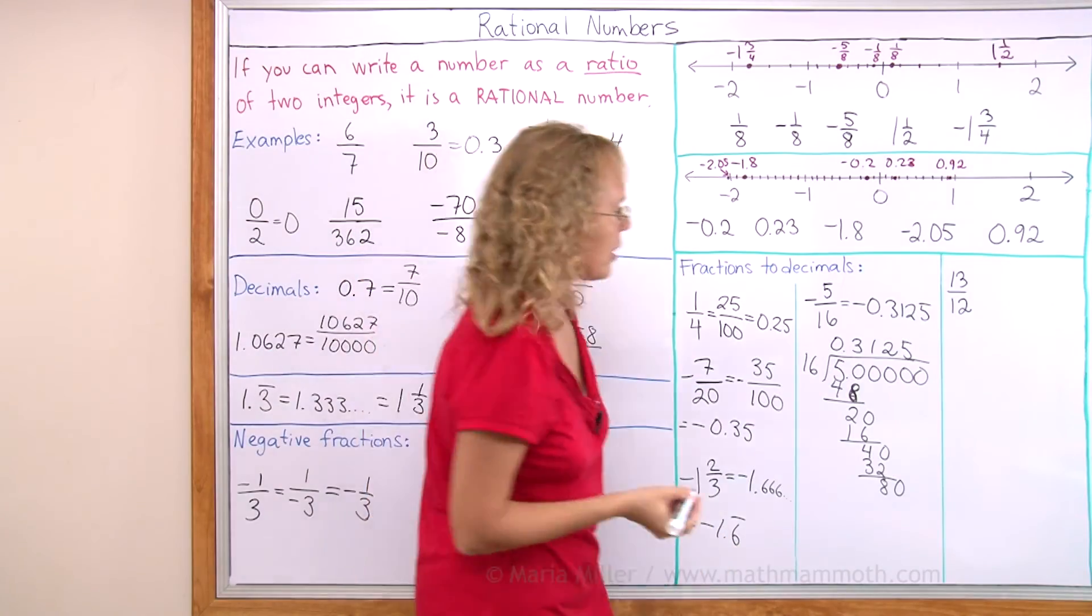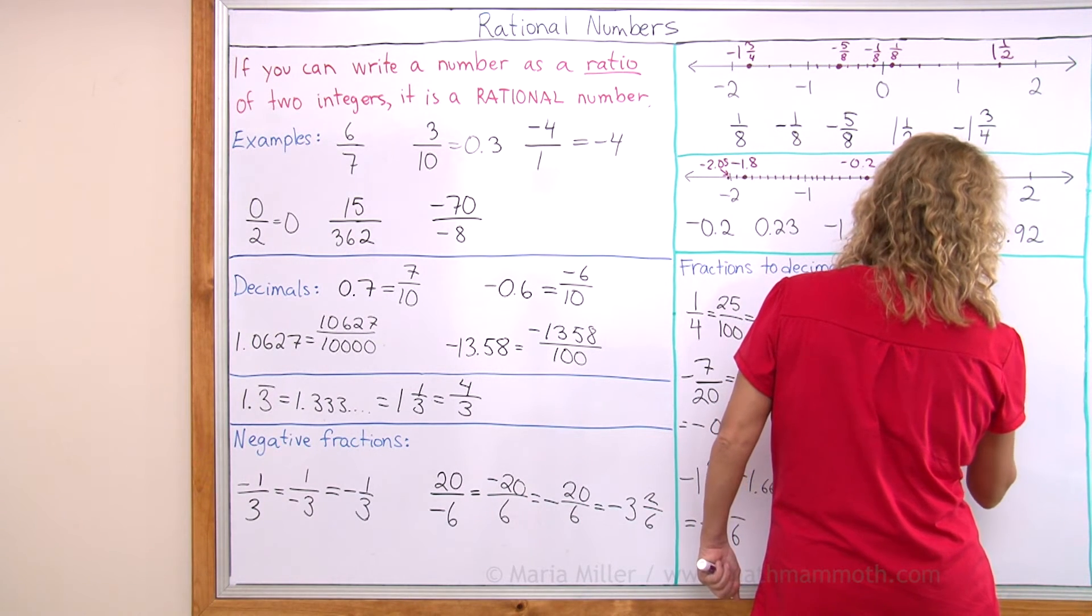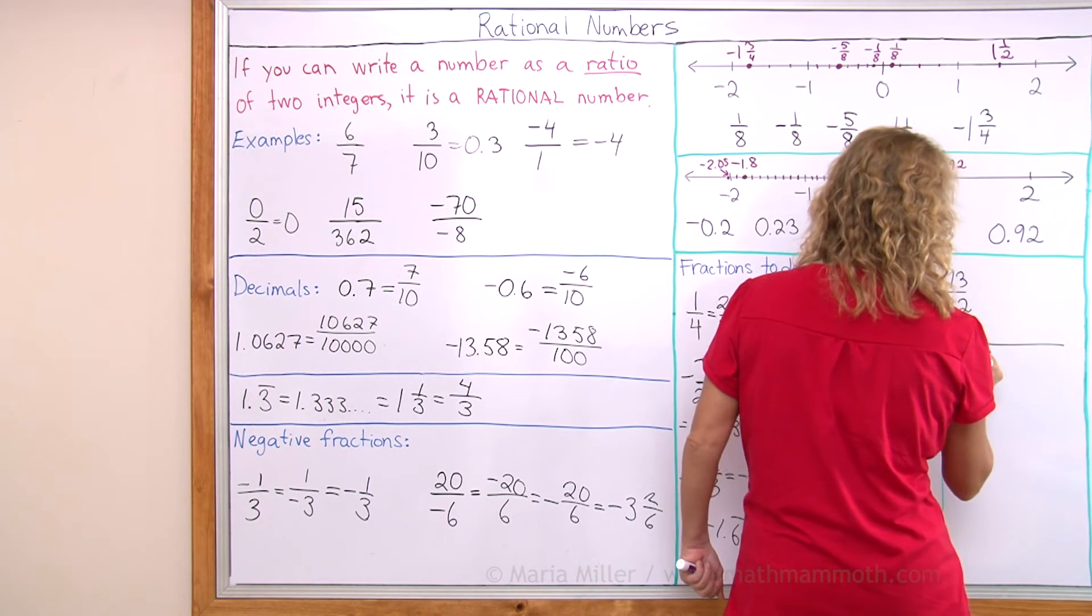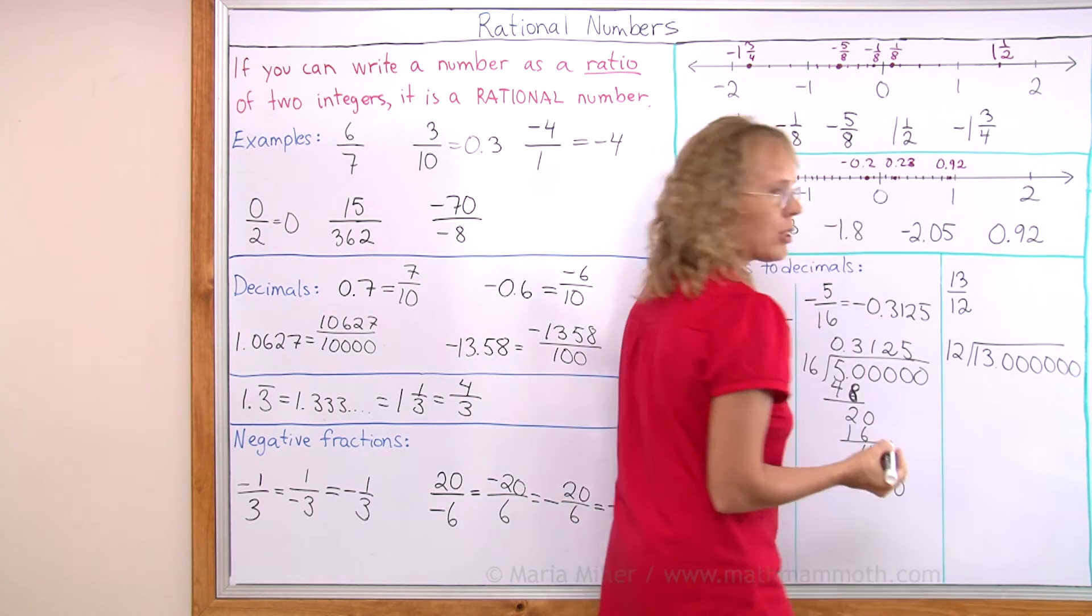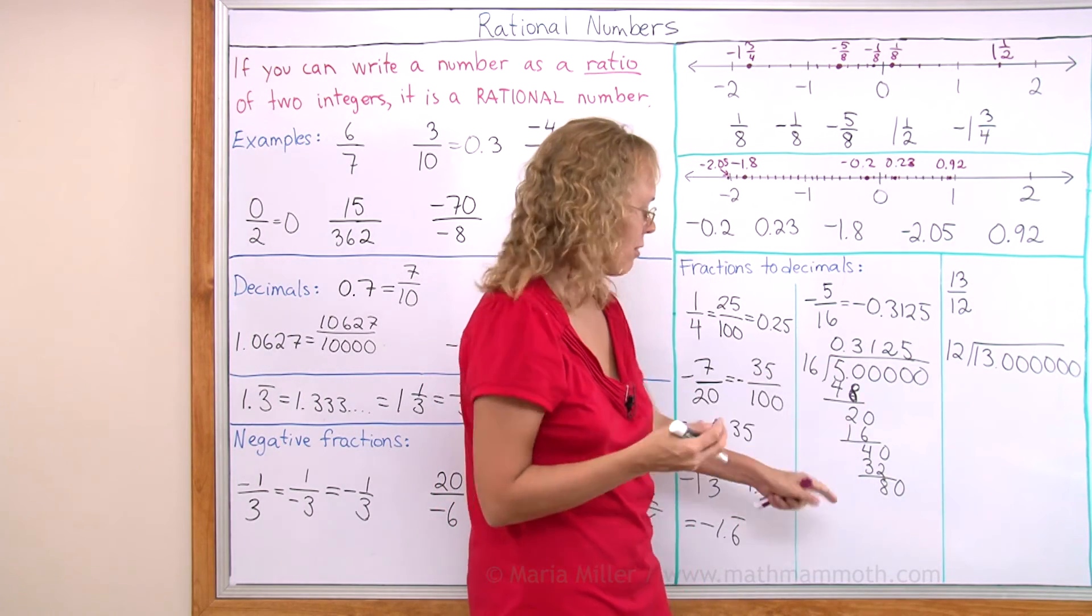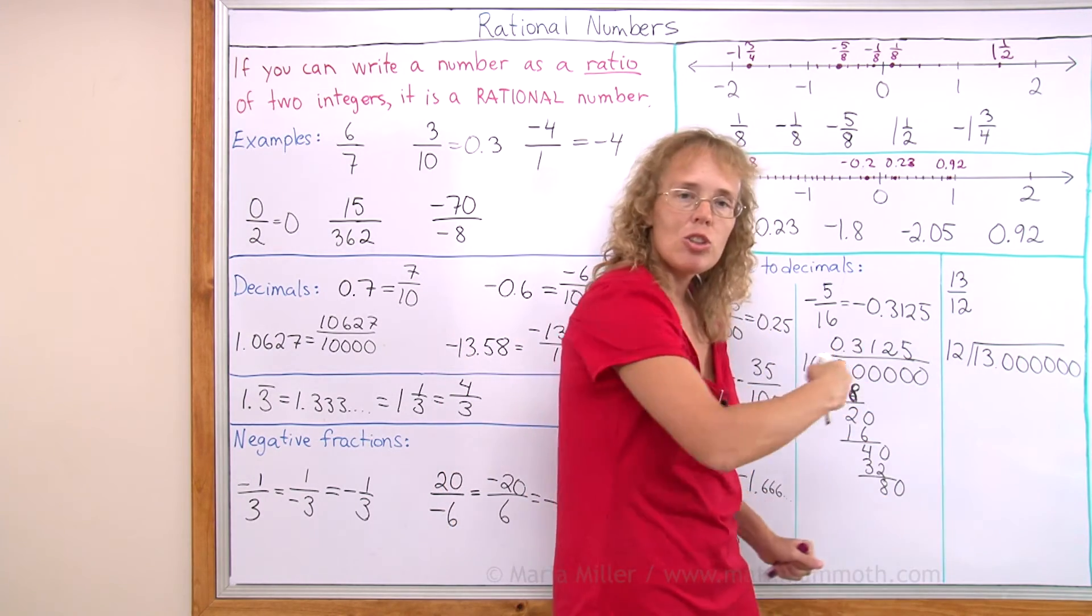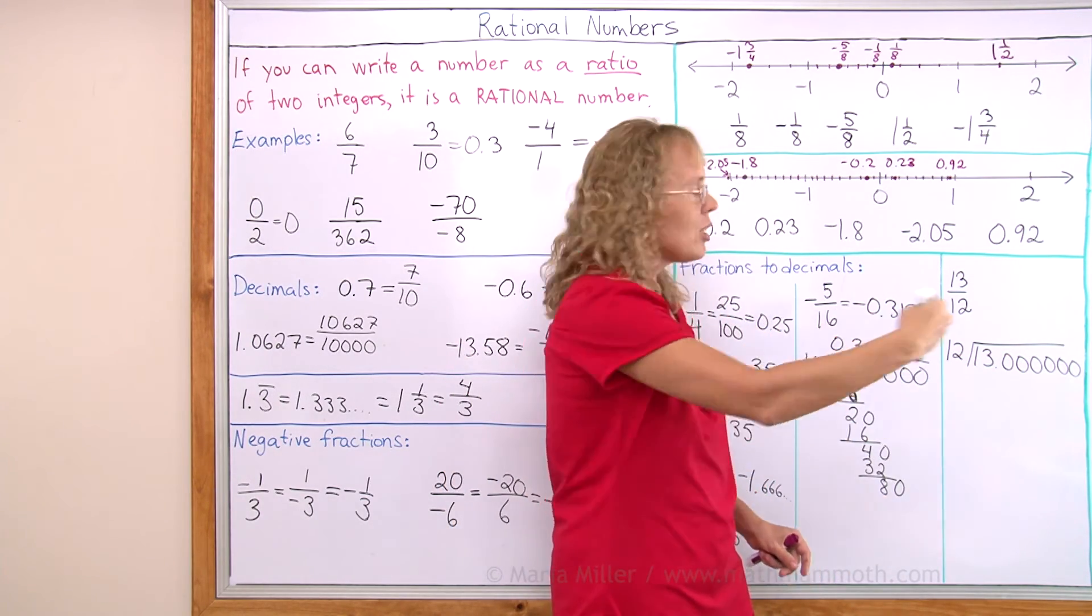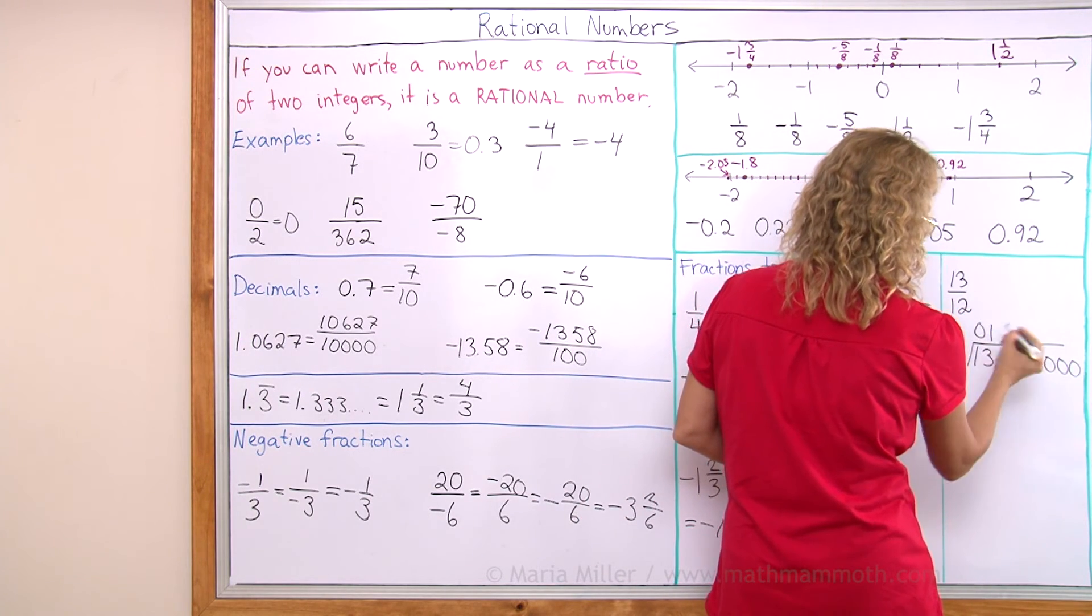13 over 12. Let's try the same thing. It's 13 we are dividing by 12. Again, just put lots of decimal zeros. We don't know if it's going to terminate like this one, or if the division is at some point going to become even, or if it's just going to be a division that continues indefinitely. The decimal continues indefinitely. 12 goes into 13 once.